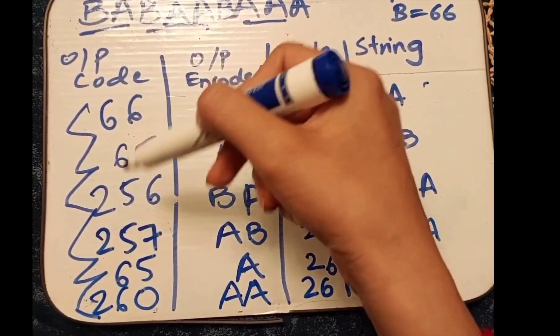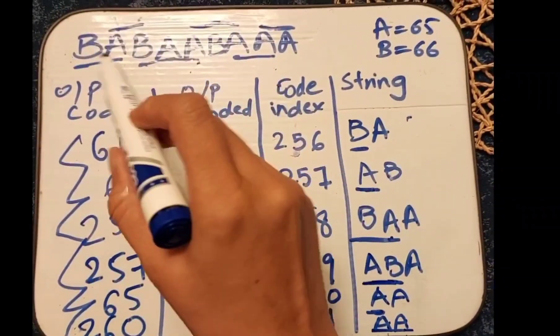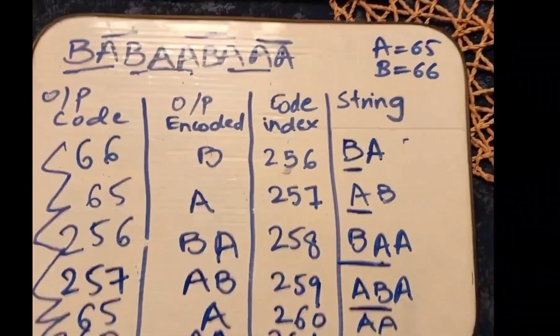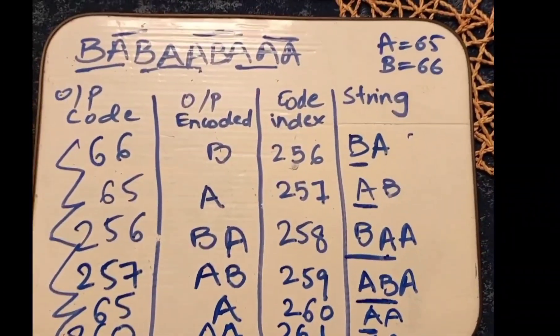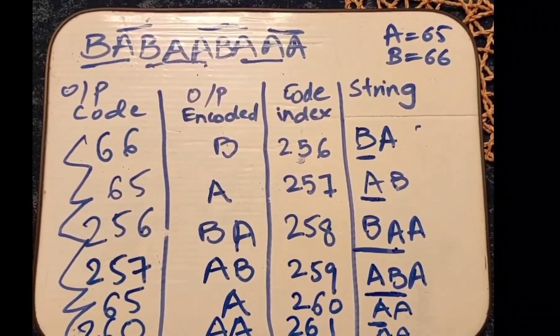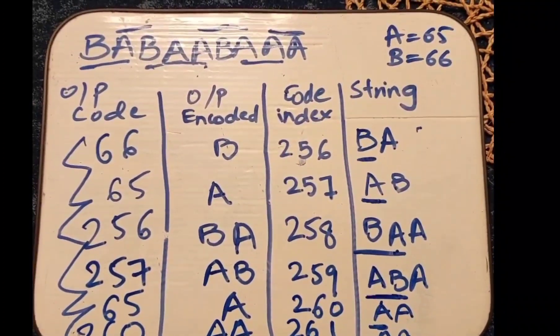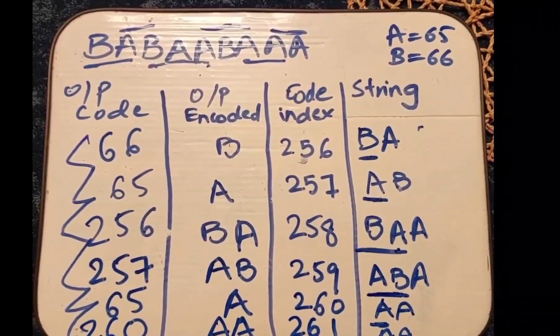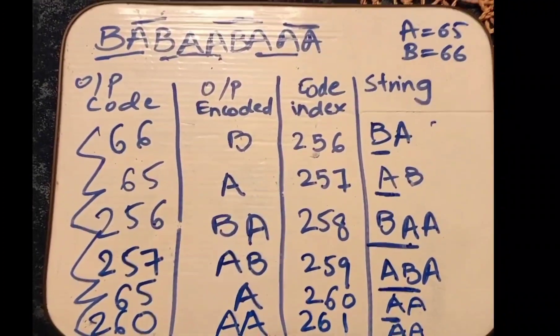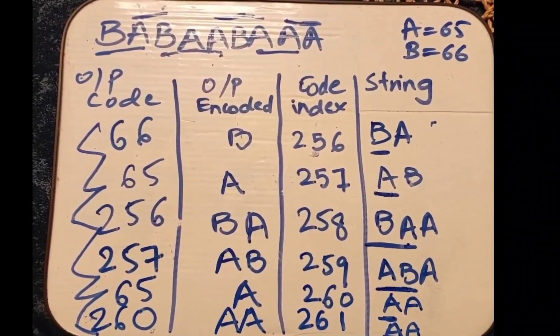This code represents the original string, and this is how you do LZW encoding. I hope the concept is now clear. Thank you very much — do like and subscribe to the video.